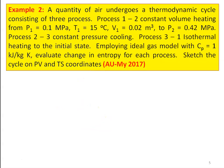We take example 2 from the May 2017 question paper. A quantity of air undergoes a thermodynamic cycle consisting of 3 processes. Process 1–2: constant volume heating from P1 = 0.1 MPa, T1 = 15°C, V1 = 0.02 m³ to P2 = 0.42 MPa. Process 2–3: constant pressure cooling. Process 3–1: isothermal heating to the initial state. CP = 1 kJ/kg·K. Evaluate the change in entropy of each process and sketch the cycle on PV and TS coordinates.